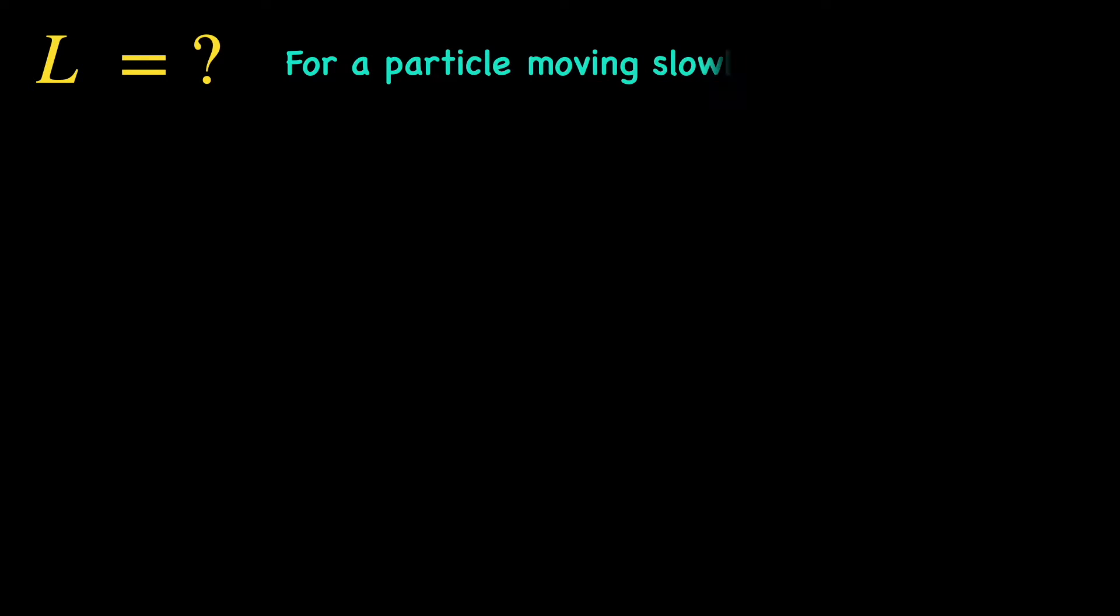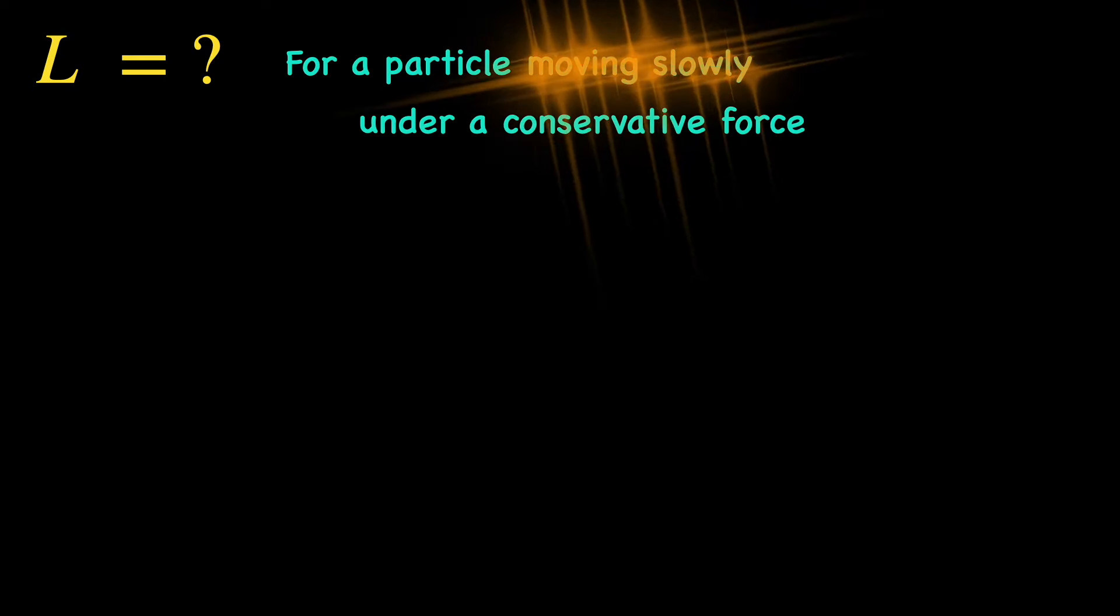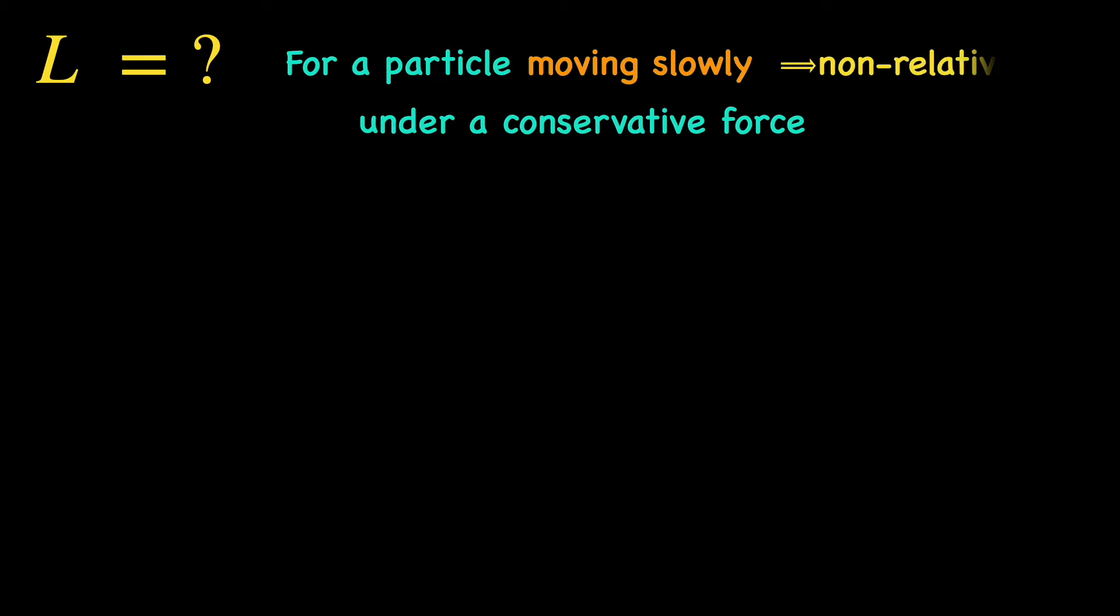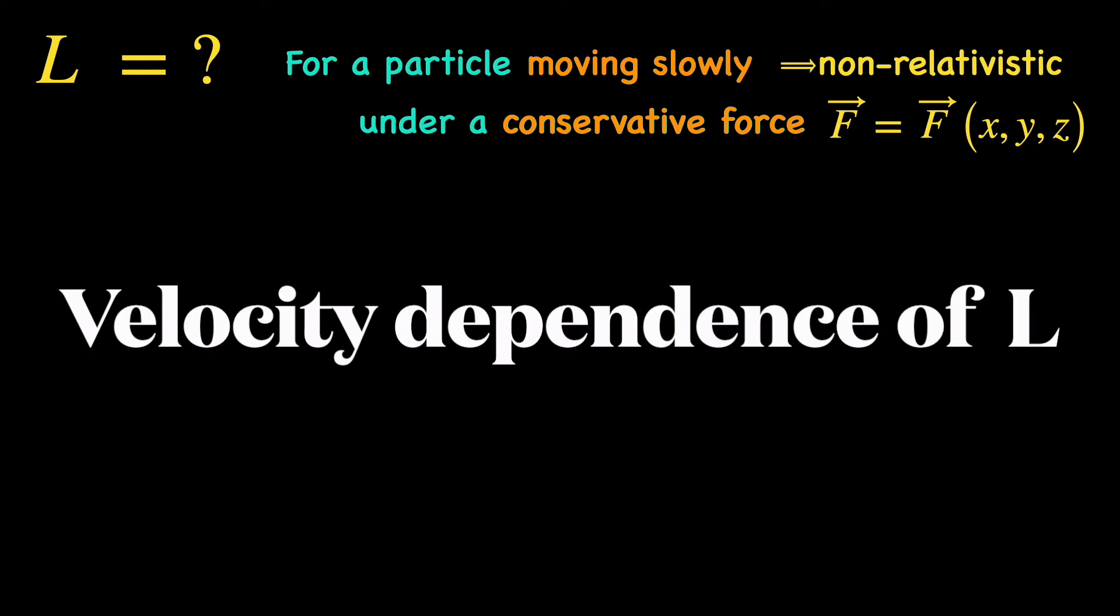So, in today's video, we shall discuss how one can do that taking a particle moving slowly under a conservative force as an example. By the way, moving slowly is a colloquial way of saying non-relativistic and conservative force means the force depends only on the position coordinates of the particle. With that understood, let us first talk about the momentum of this particle.